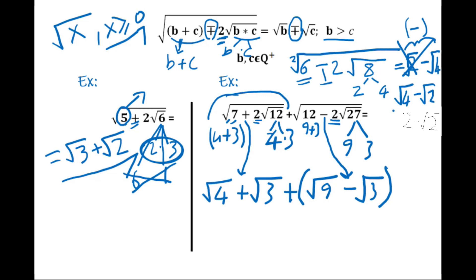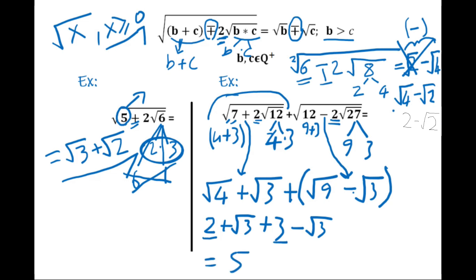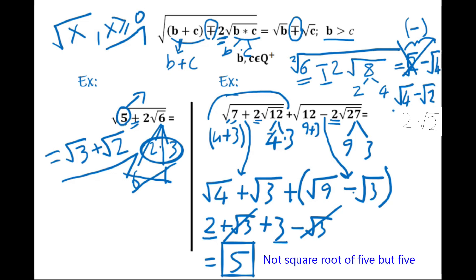Opening the parentheses: √4 = 2, √9 = 3, so we get 2 + √3 + 3 − √3. The +√3 and −√3 cancel out, 2 + 3 = 5, and the final answer is √5.